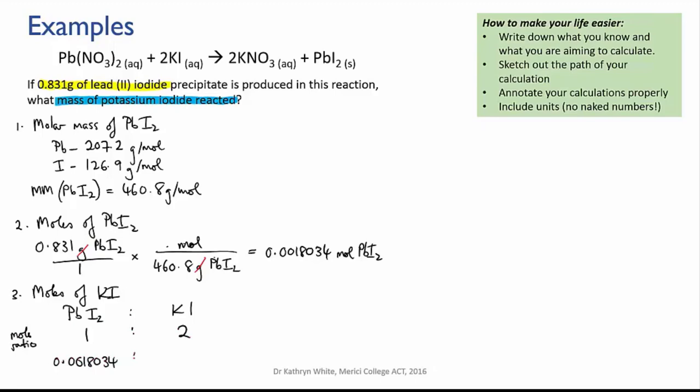So we need to multiply the moles of lead iodide by two and that gives us 0.0036068 moles of potassium iodide.